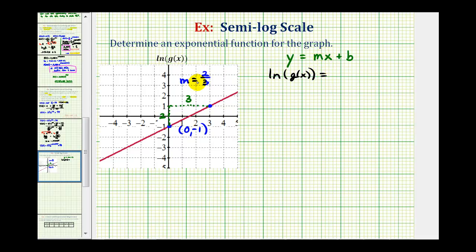We can still replace m with two-thirds and b with the y-intercept of negative one. So we'd have ln(g(x)) = (2/3)x - 1.